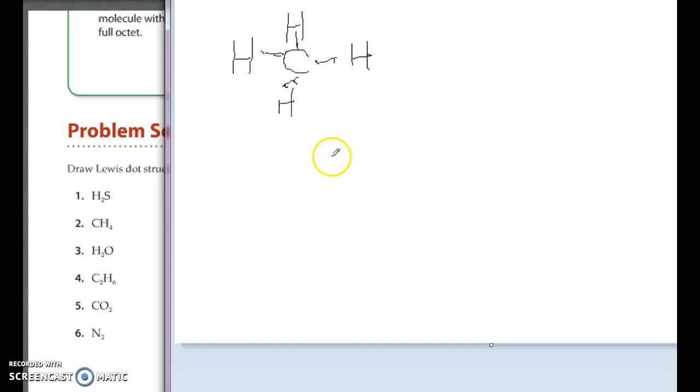All right. And for C2H6, again, we're going to have nice single bonds happening all over the place. Because each hydrogen can make one bond. And there's six total hydrogens. And then, of course, the carbons are going to bond together in the middle.